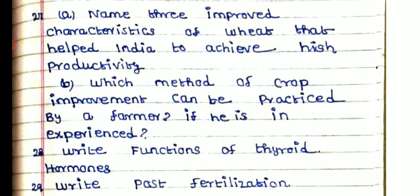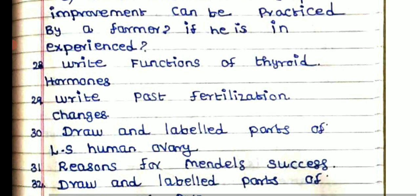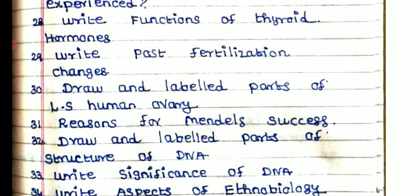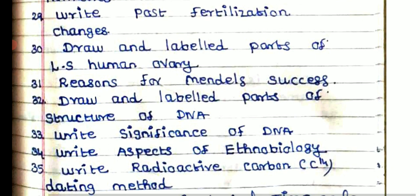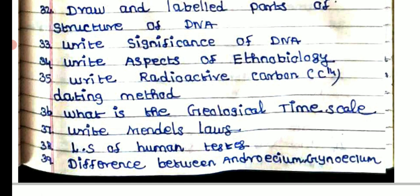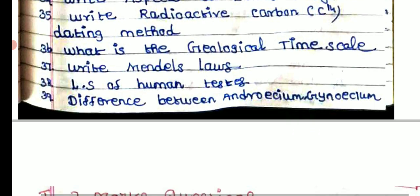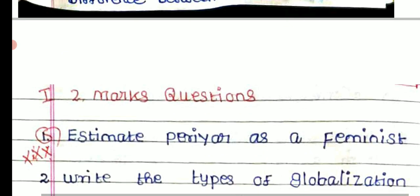When a person starts taking drugs and alcohol, why does habitat destruction increase? Name the three improvement characters of wheat that help achieve productivity. Which methods of crop improvement can be practiced by the farmer? Write the functions of thyroid hormones. Write the events of fertilization. Draw and label the parts of a longitudinal section of a human ovary. Explain the reasons for Mendel's success. Draw and label the parts of the structure of DNA. Write the significance of DNA. What are the aspects of ethnobotany? Write about the radioactive carbon dating method. What are the geological time scales? Draw the longitudinal section of human testes. Write the difference between androecium and gynoecium.